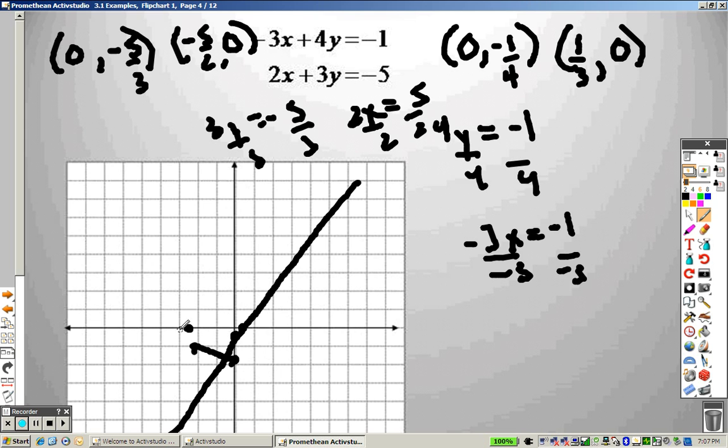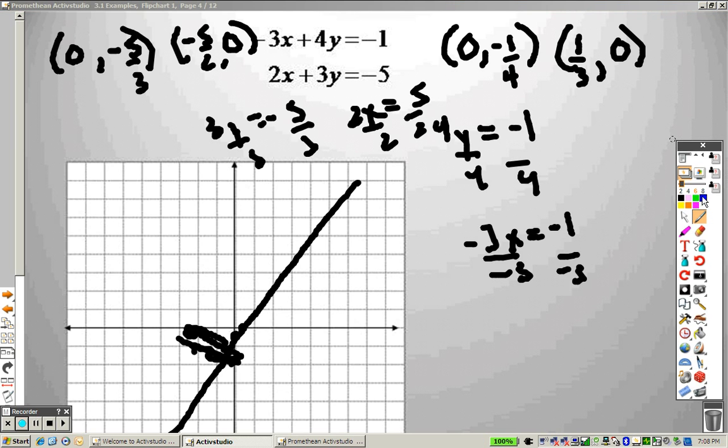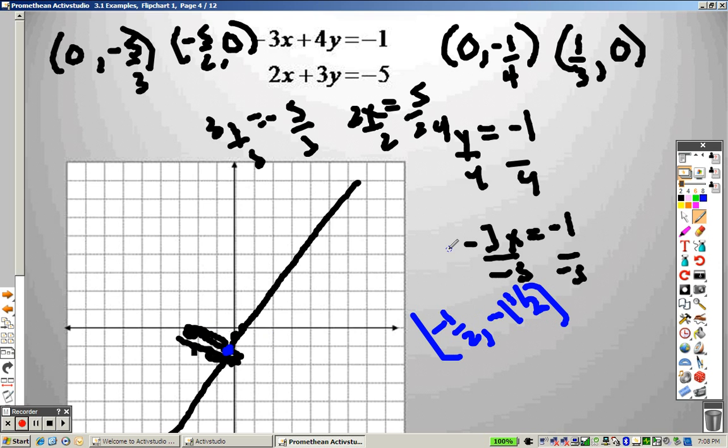At least make a valid attempt to. Basically, they cross about right there, which is about going over negative 1 half and down about 1 and 1 half, we'll just say roughly. Now, for right now, yes, we are just guessing. Not a problem. Okay?